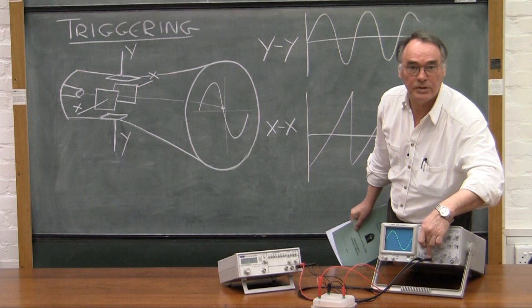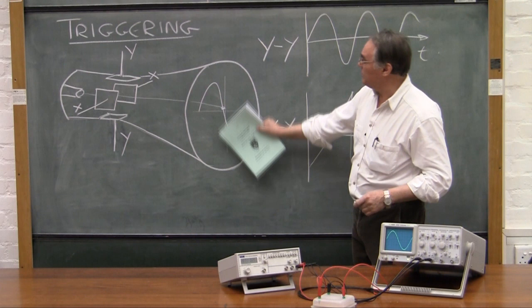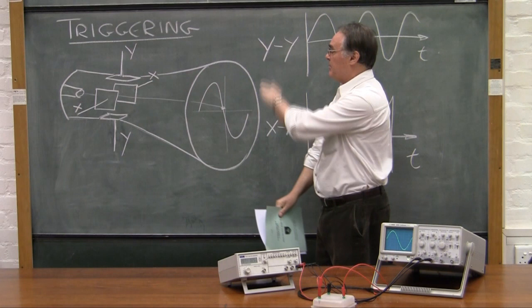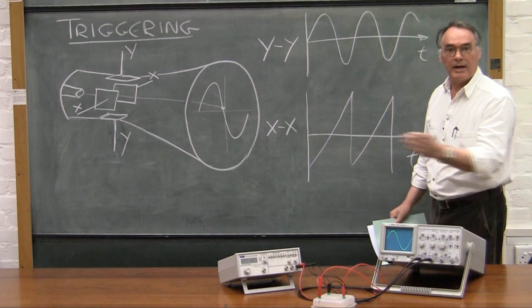What that voltage does is it pulls the dot up and down. So, the applied voltage is in top and bottom, pulling the dot up and down. And we've got the time base voltage pulling the dot from left to right, sweeping across the screen.